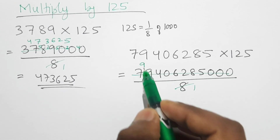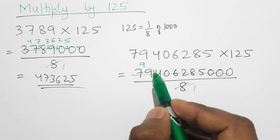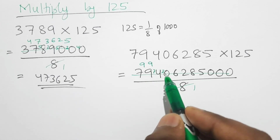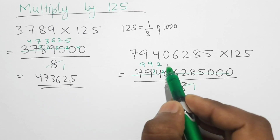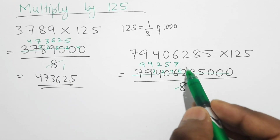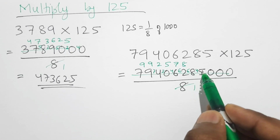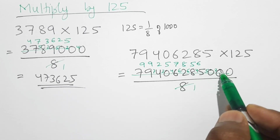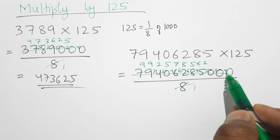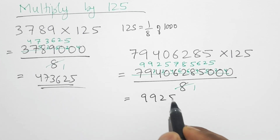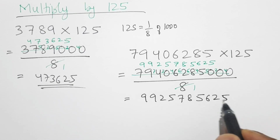Dividing 79406285000 by 8: 8×9 is 72, 7 left; 8×9 is 72, 2 left; 8×2 is 16, 4 left; 8×5 is 40, 6 left; 8×7 is 56, 6 left; 8×8 is 64, 4 left; 8×5 is 40, 5 left; 8×6 is 48, 2 left; 8×2 is 16, 4 left; 8×5 is 40. The product is 9925785625.